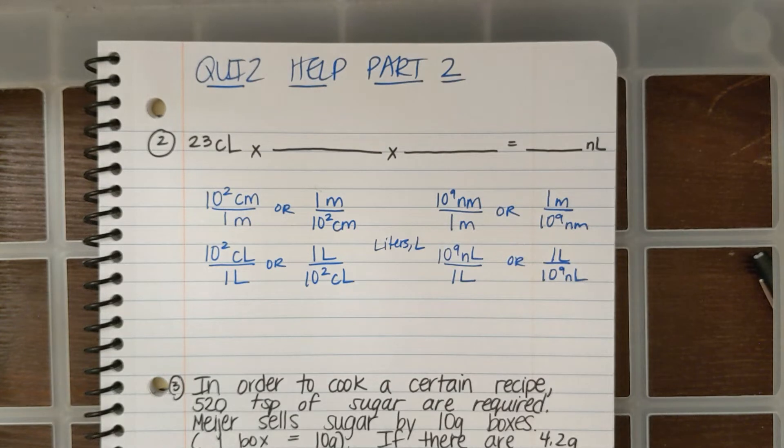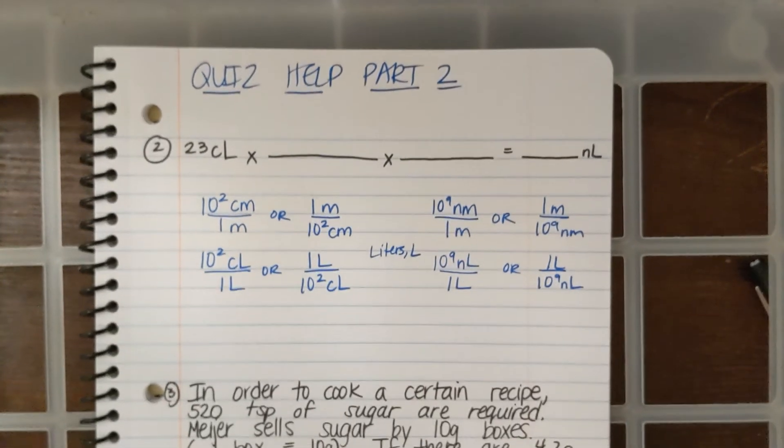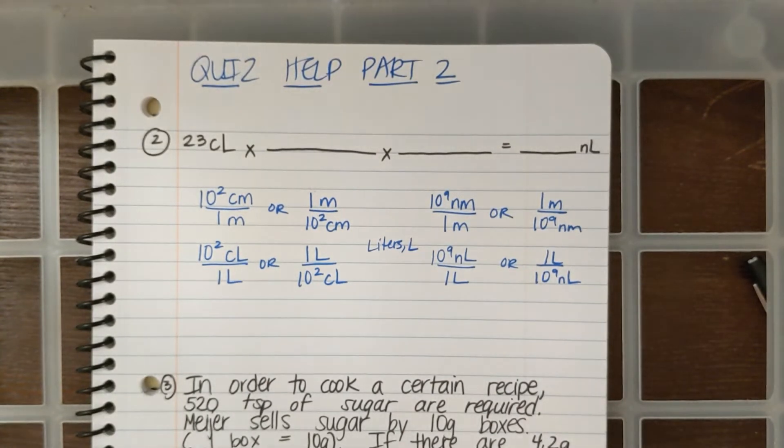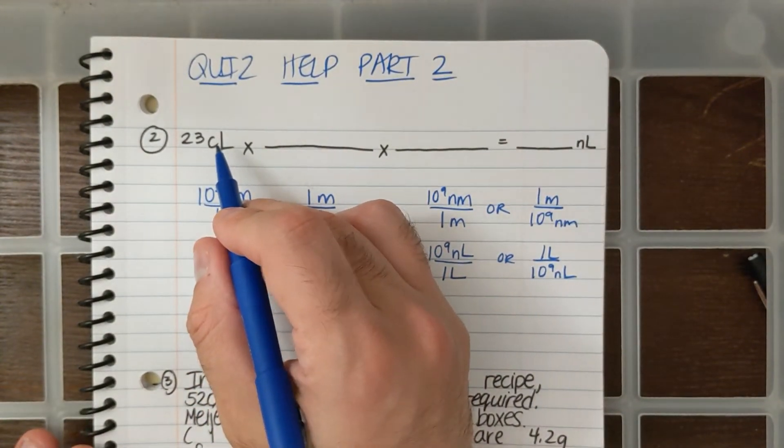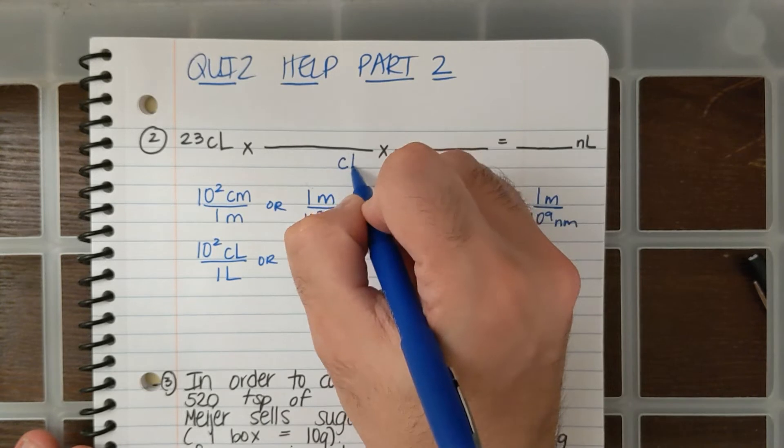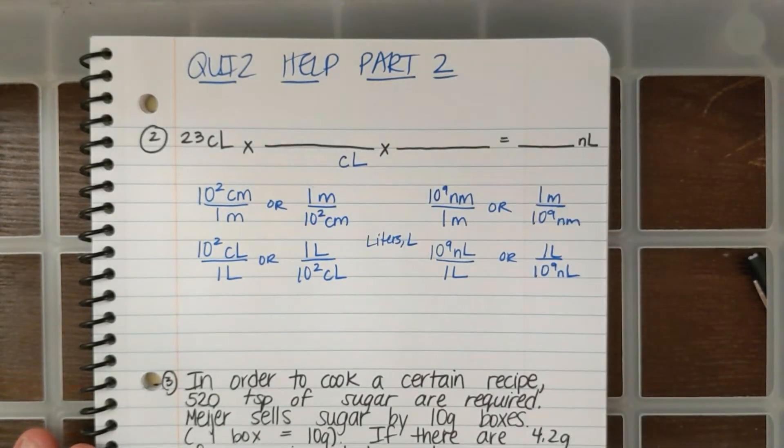Alright, so these are a bunch of conversion factors that I got from my notes handout, and you could find that too. Let's start setting up dimensional analysis for this question. For this question, I start with centiliters. If I start with centiliters, that means this goes on the bottom here, CL.